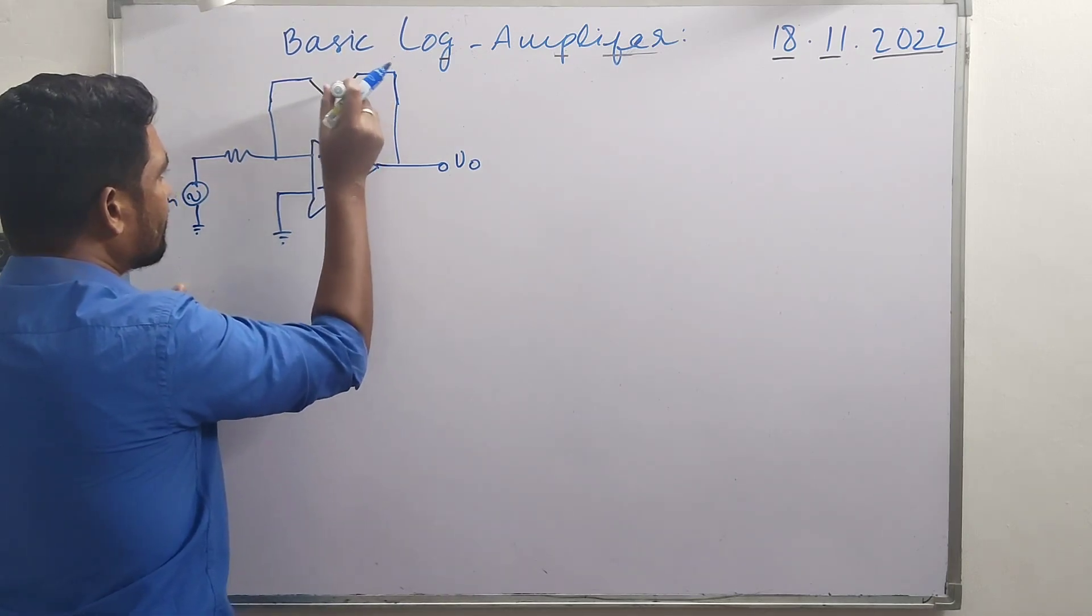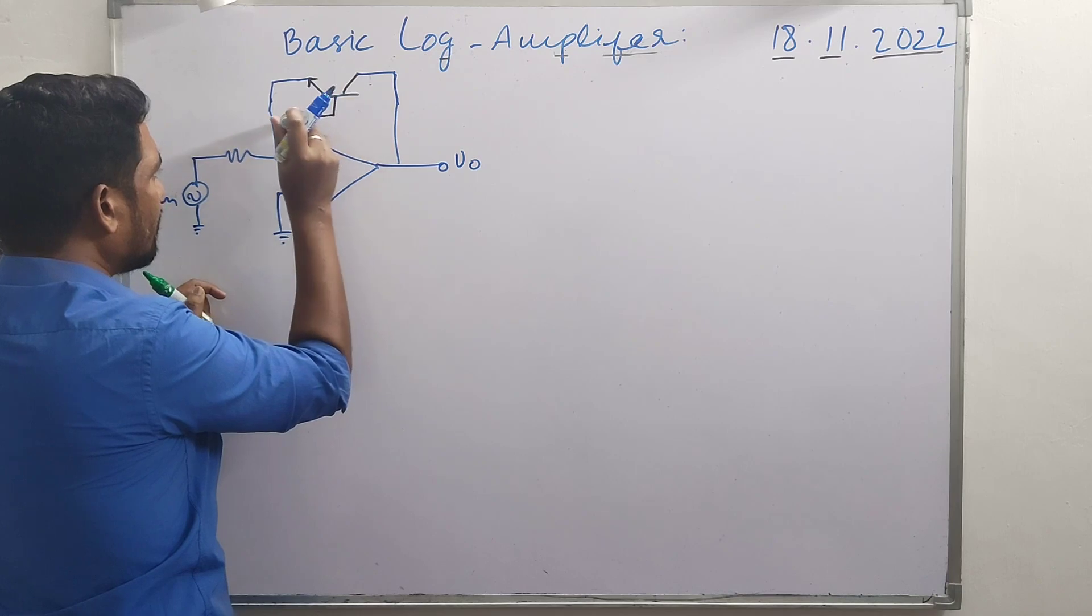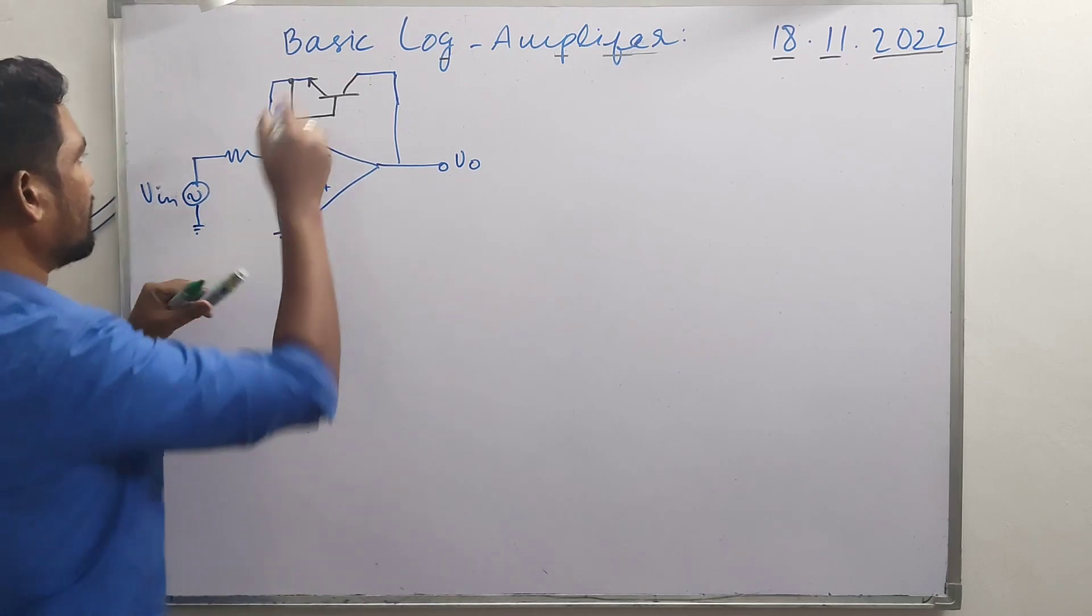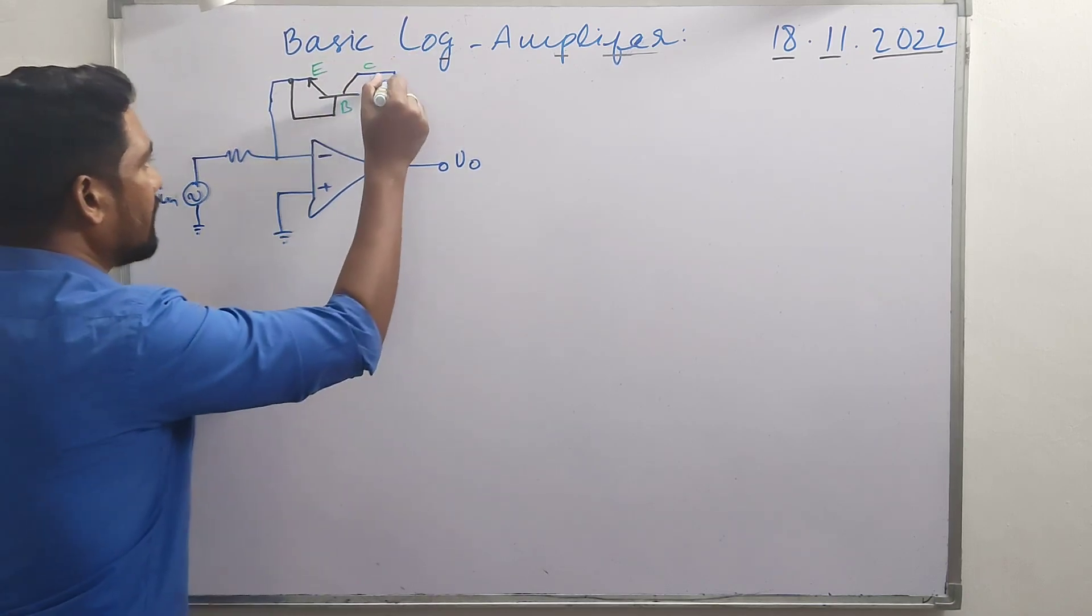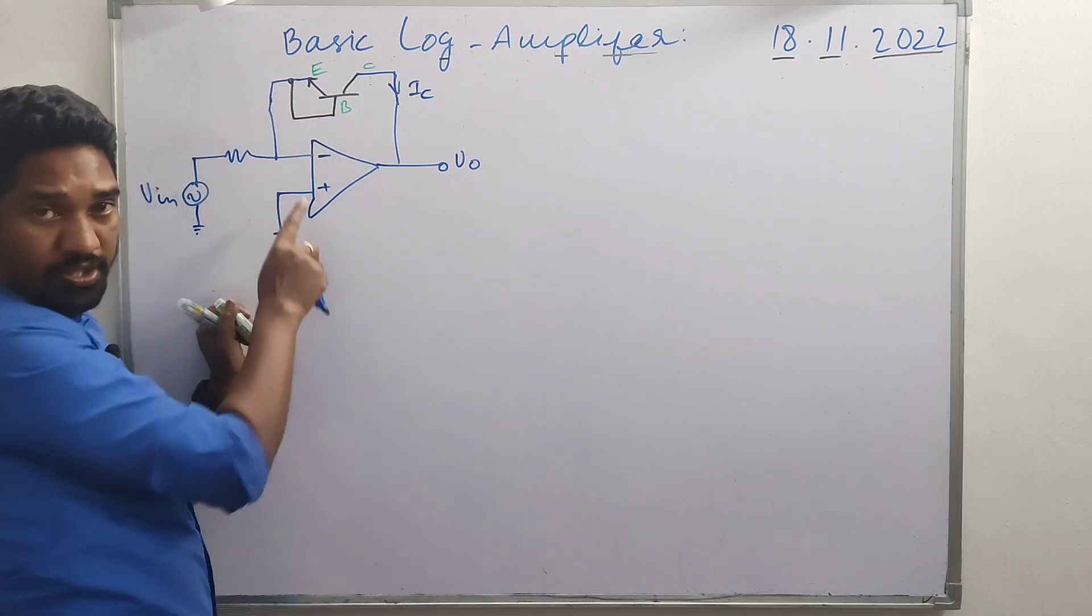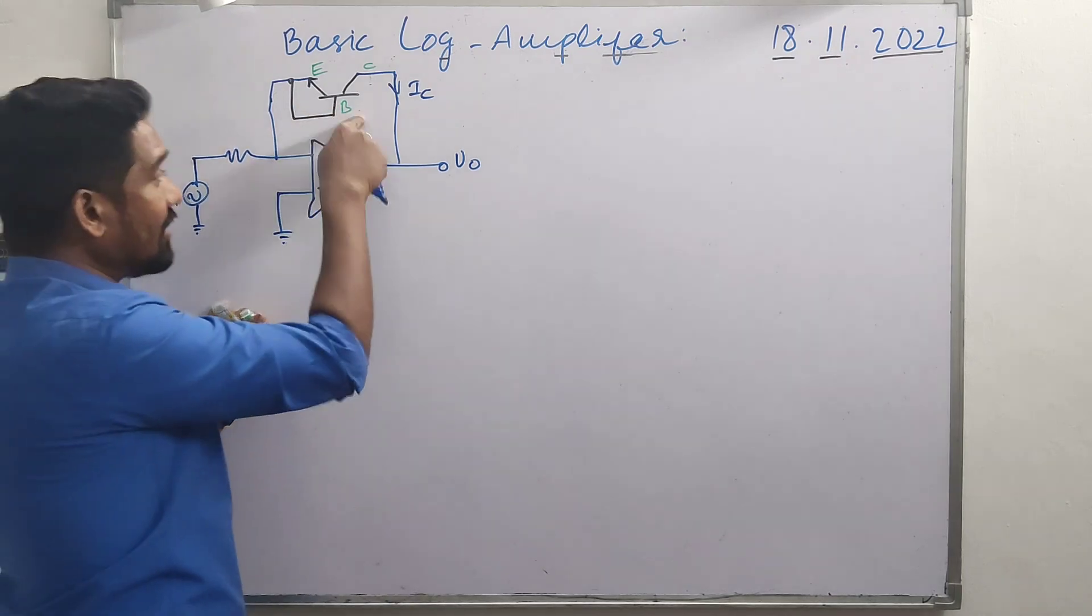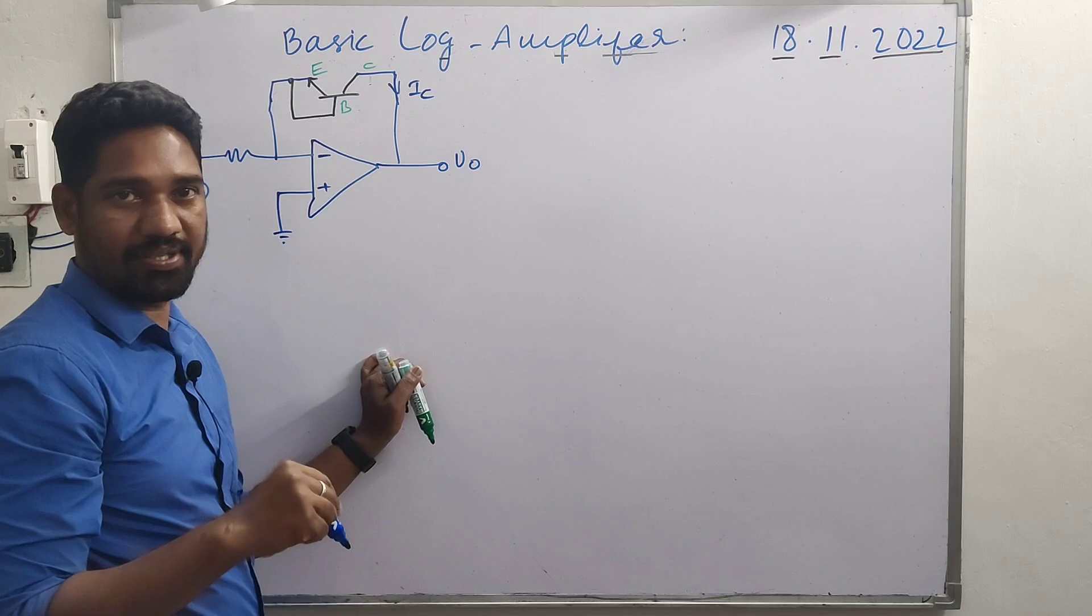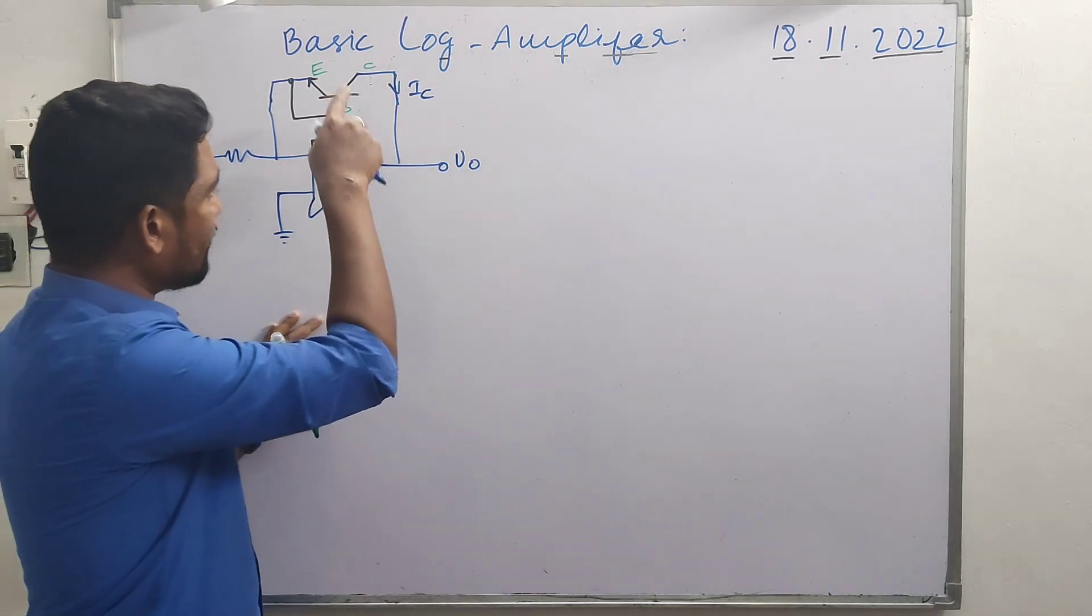This is the arrangement. We have a transistor like this - watch carefully. Emitter and base are shorted. This is emitter, this is base, and this is collector. The IC collector current flows in this arrangement with emitter-base short circuit. This 3-terminal device is used like a 2-terminal device. The transistor characteristic is equalized to diode characteristic, so the transistor acts like a diode.